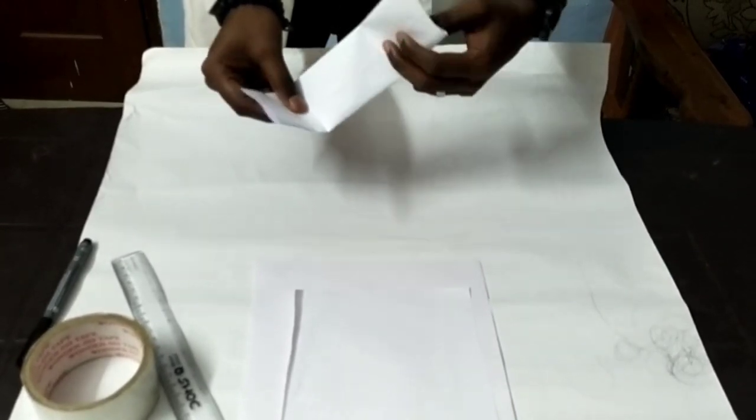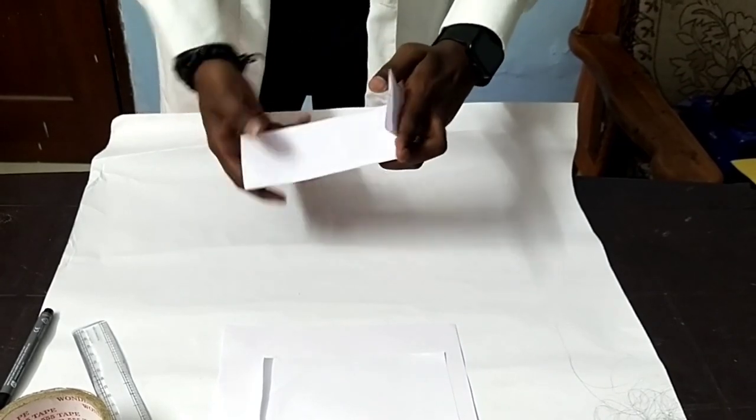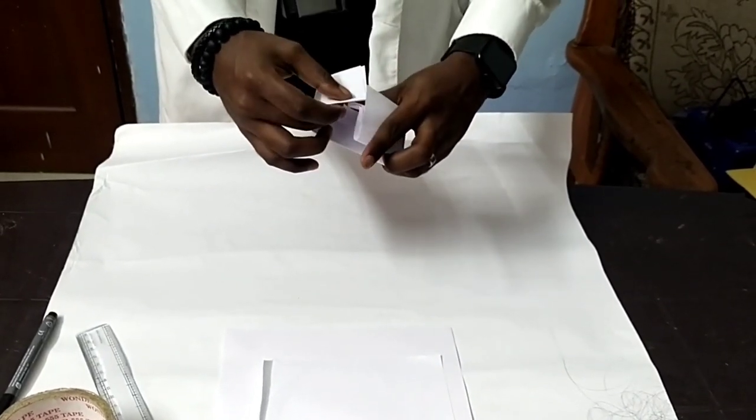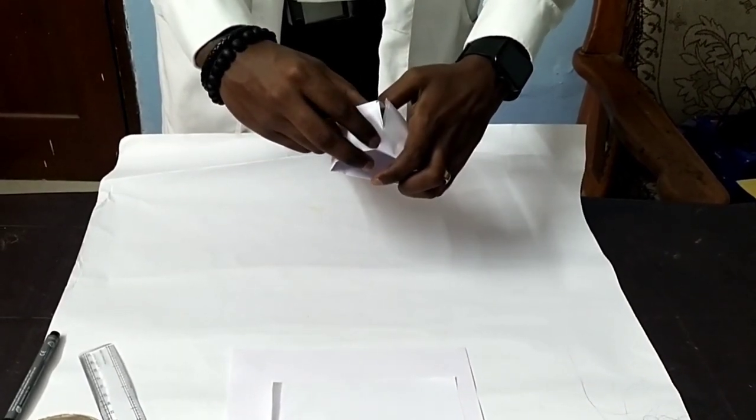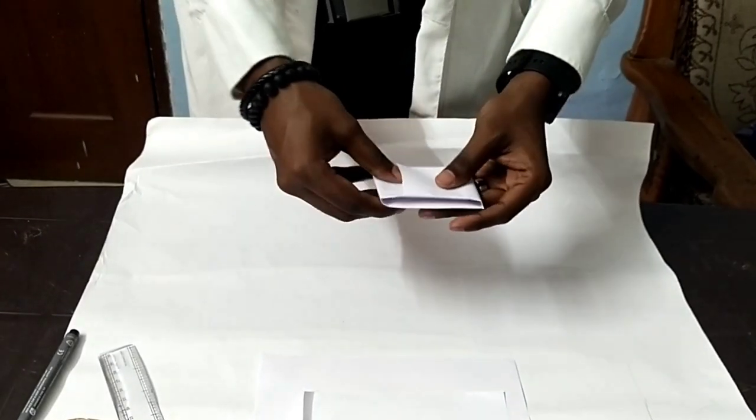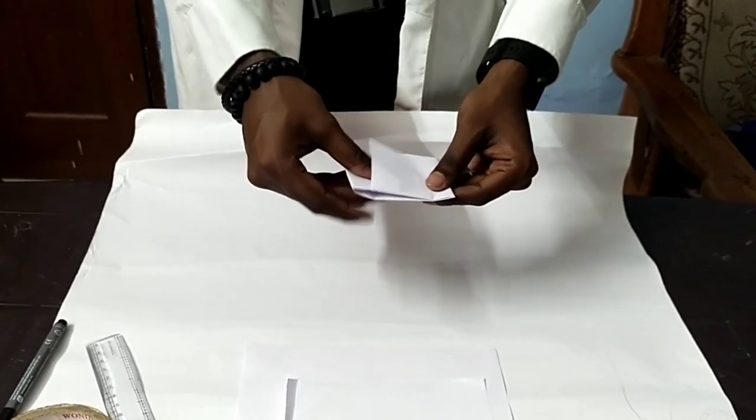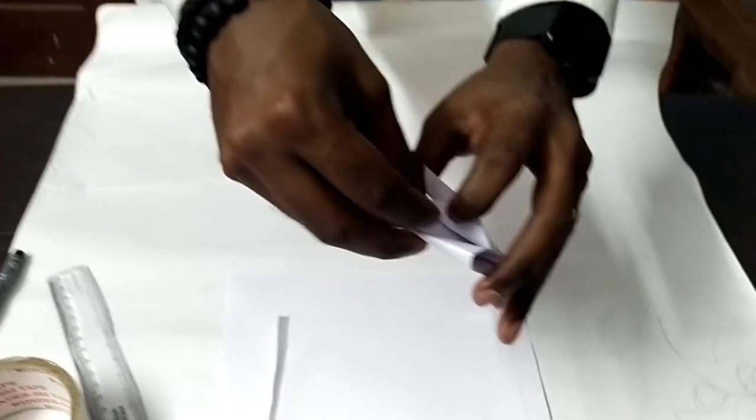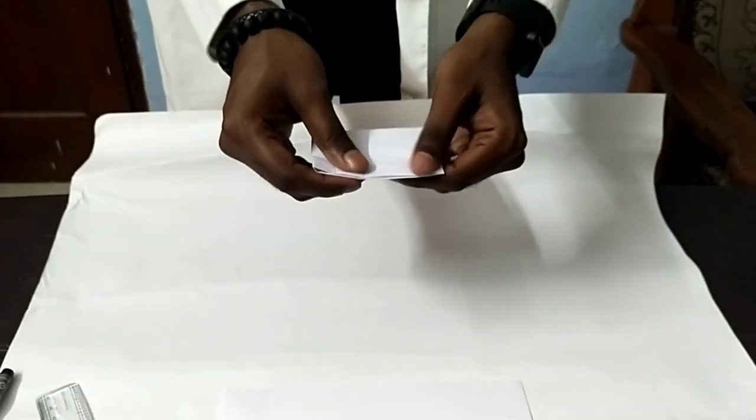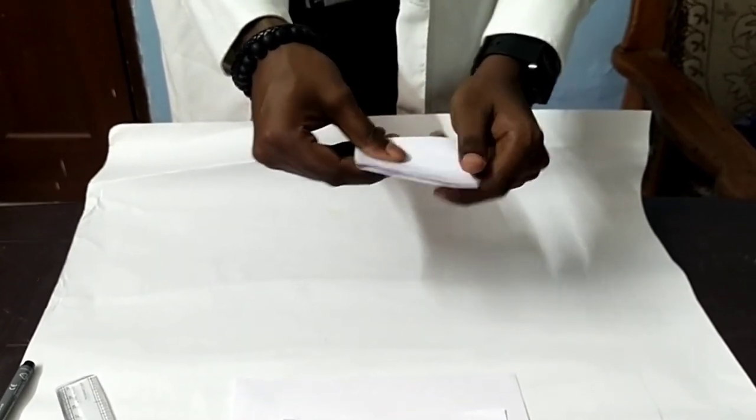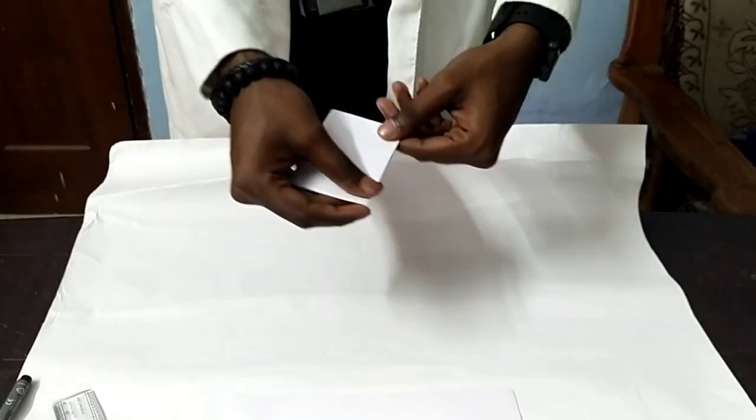Now fold the remaining triangle over the first fold, creating a smaller triangle pocket or packet. So now I have folded and tucked it in. You can see it. The one corner has been placed inside it. Press along the edges to secure the fold. Now you can see the druggist fold is made.